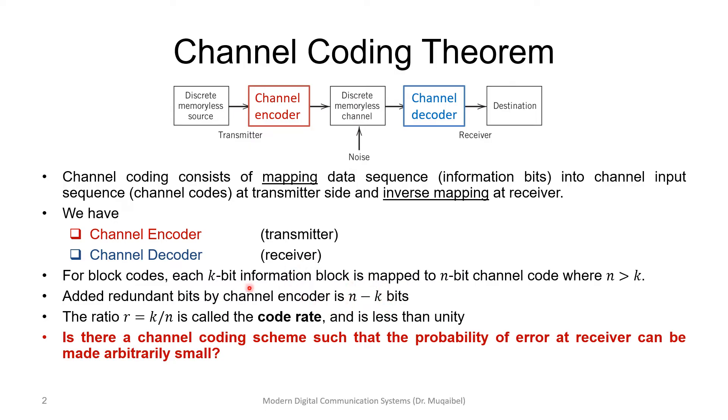The ratio between k (the original data) and the coded data is called the code rate. So k is the original block length, n is the length of the code after encoding, and the ratio between them, k/n, which is expected to be less than one, is called the code rate.